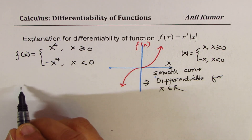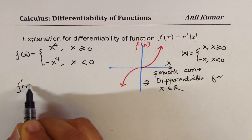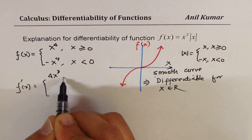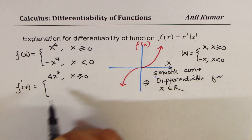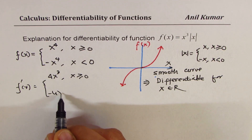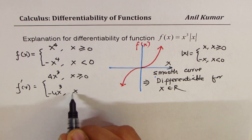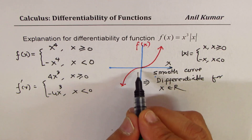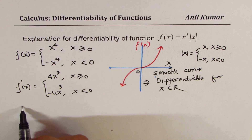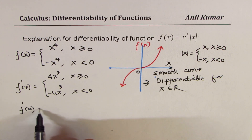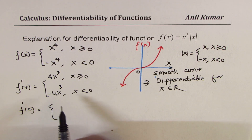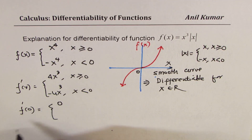Let's find the derivative using the rules. The derivative of this function will be 4x cubed for x greater than or equal to 0, and minus 4x cubed for x less than 0. How about the derivative at 0? That could be different.